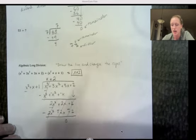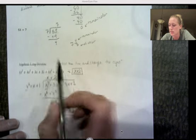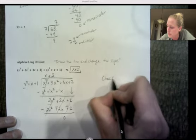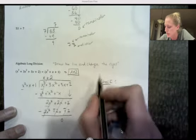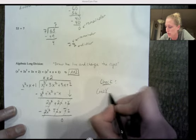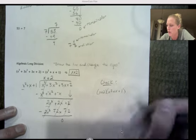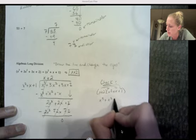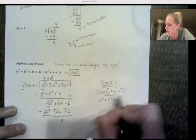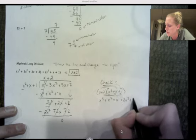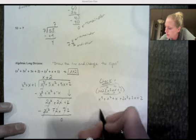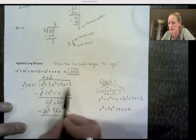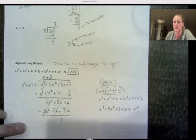We can check this since the opposite of division is multiplication. (x + 2) times (x² + x + 1) should equal our dividend. Distributing: x times everything gives x³ + x² + x, and 2 times everything gives 2x² + 2x + 2. Combining like terms gives us that same exact dividend, confirming the answer is correct.